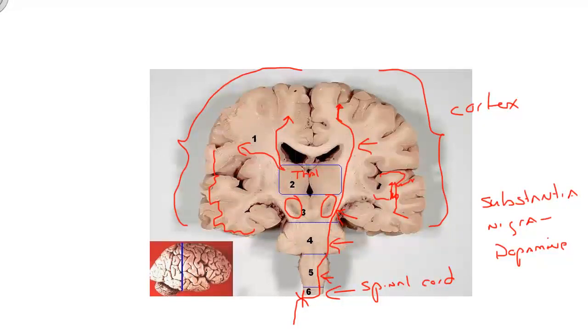That can be cortex, or it can be nuclei. And collections of axons, myelinated ones, are white matter.